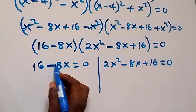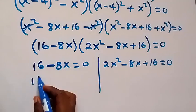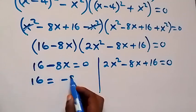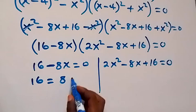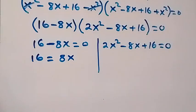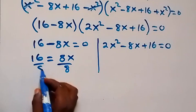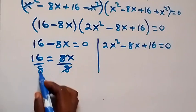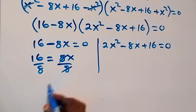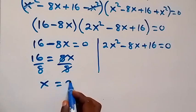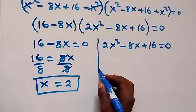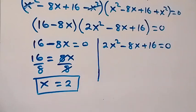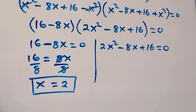From the first factor, 2x squared minus 8x plus 16 — wait, from 16 minus 8x equals zero, we take minus 8x and divide both sides by 8, giving x equals 2. So we have one real solution: x equals 2. On the other side we have a quadratic equation.